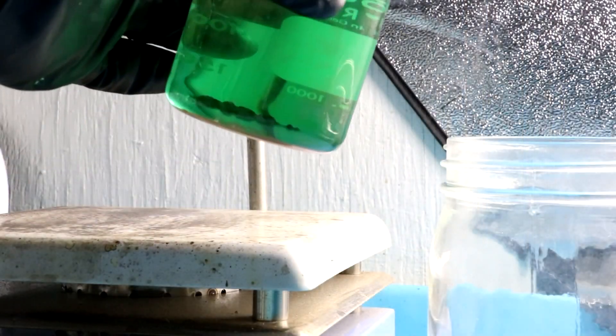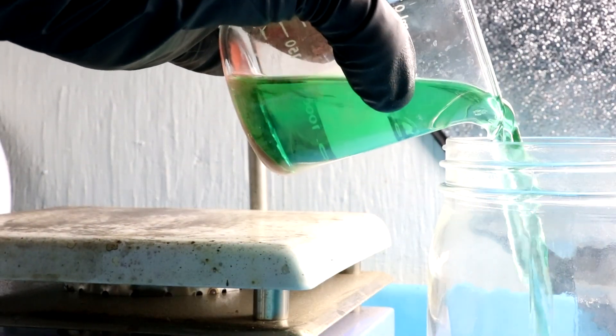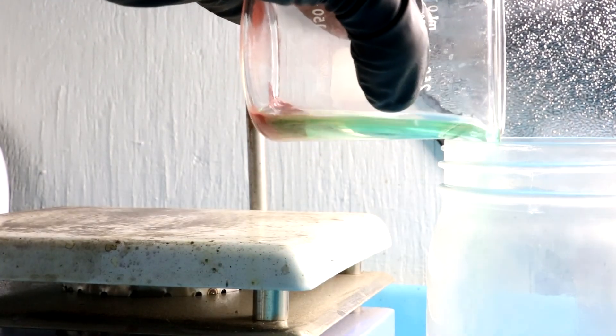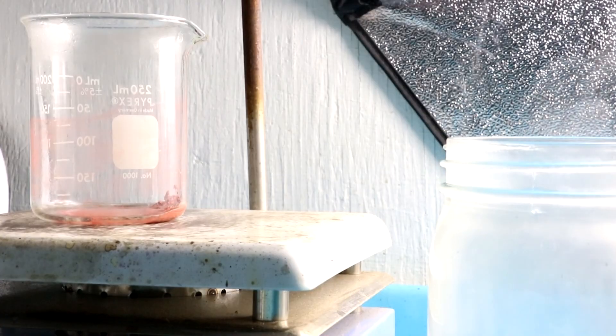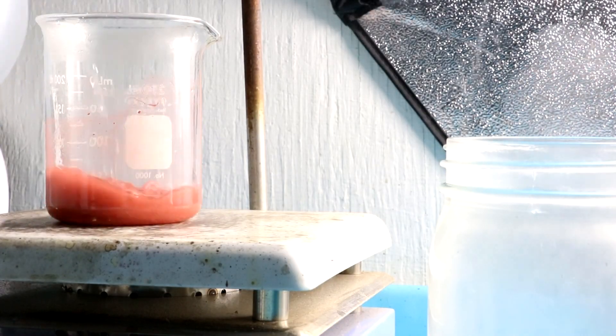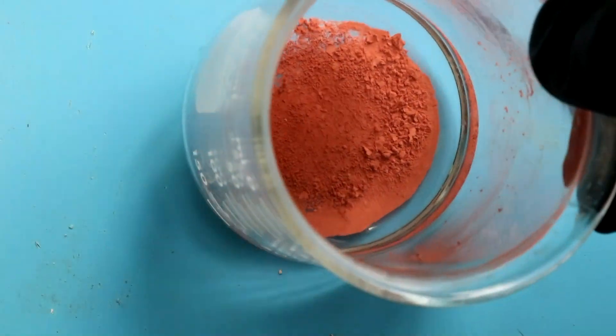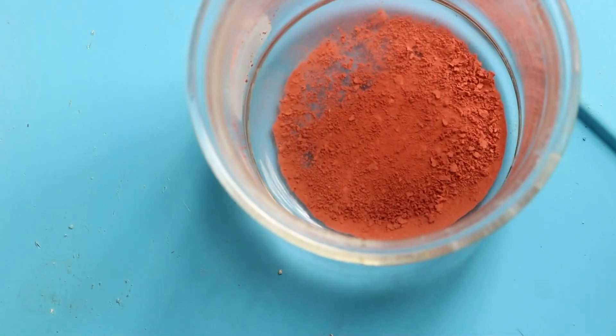So now I'm going to decant the remaining solution just so that we can see through it a little bit easier. Maybe wash it with a little bit of water. So now that we can see the copper a little bit better I'm going to add the mercury.